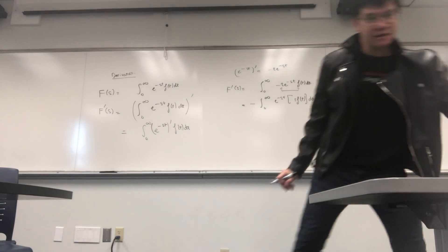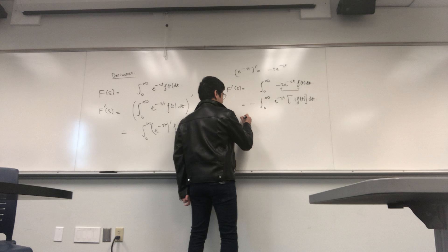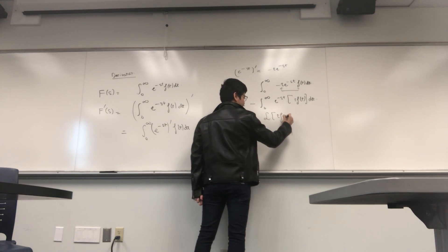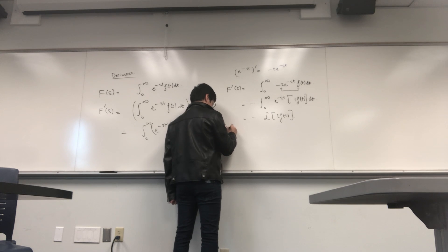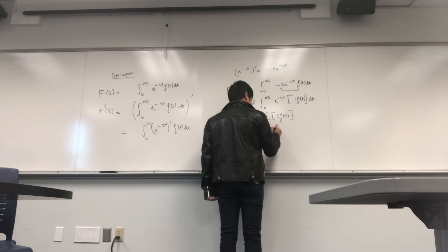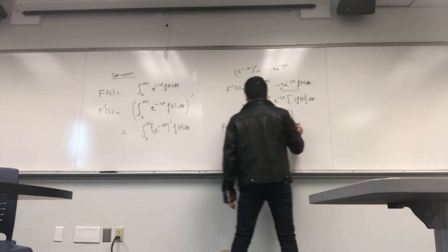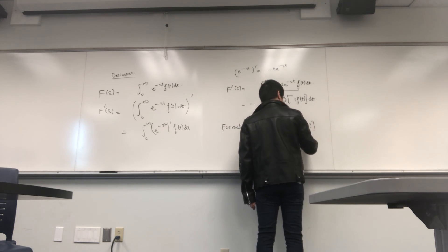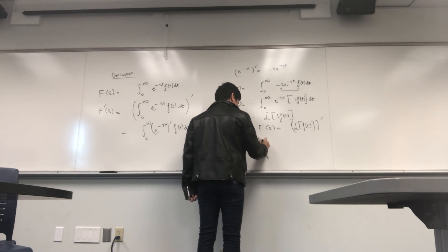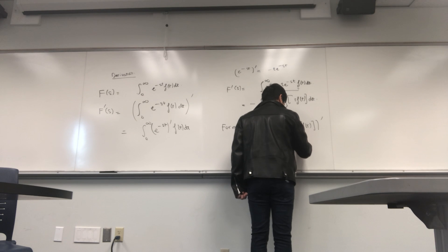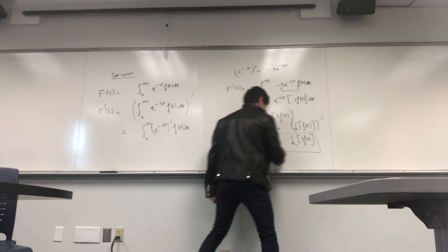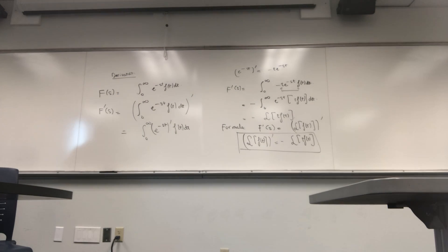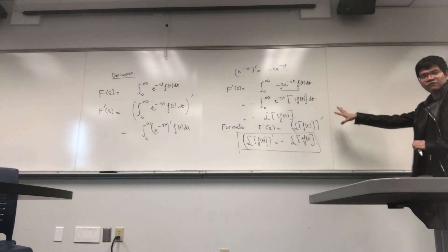That expression is negative 1 times the Laplace transform of the function t·f(t). So the formula we obtain is: F'(s) equals the Laplace transform of t·f(t) prime, meaning the derivative of the Laplace transform of f(t) equals minus the Laplace transform of t·f(t).